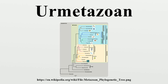Bilateral Gastrea hypothesis: This hypothesis was developed by Jagersten as an adaptation of Ernst Haeckel's gastrea hypothesis. He proposed that the bilateral gastrea had a two-stage life cycle, with a pelagic juvenile and a benthic adult stage. The invagination of the original gastrula stage he saw as bilaterally symmetric rather than radially symmetric.